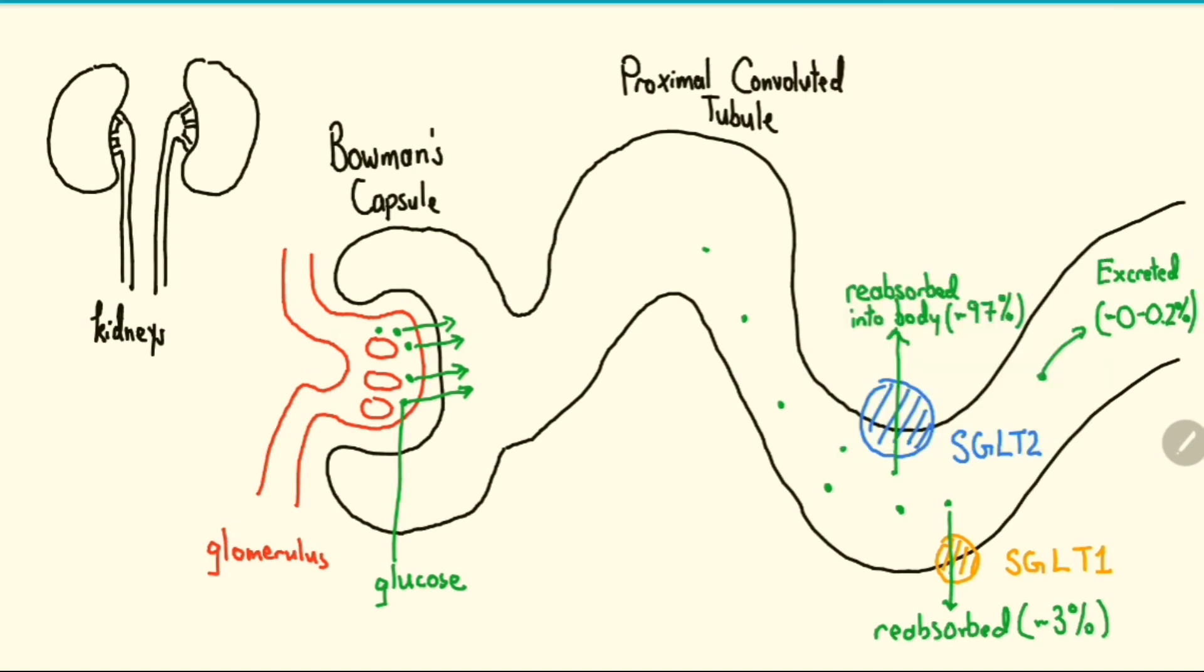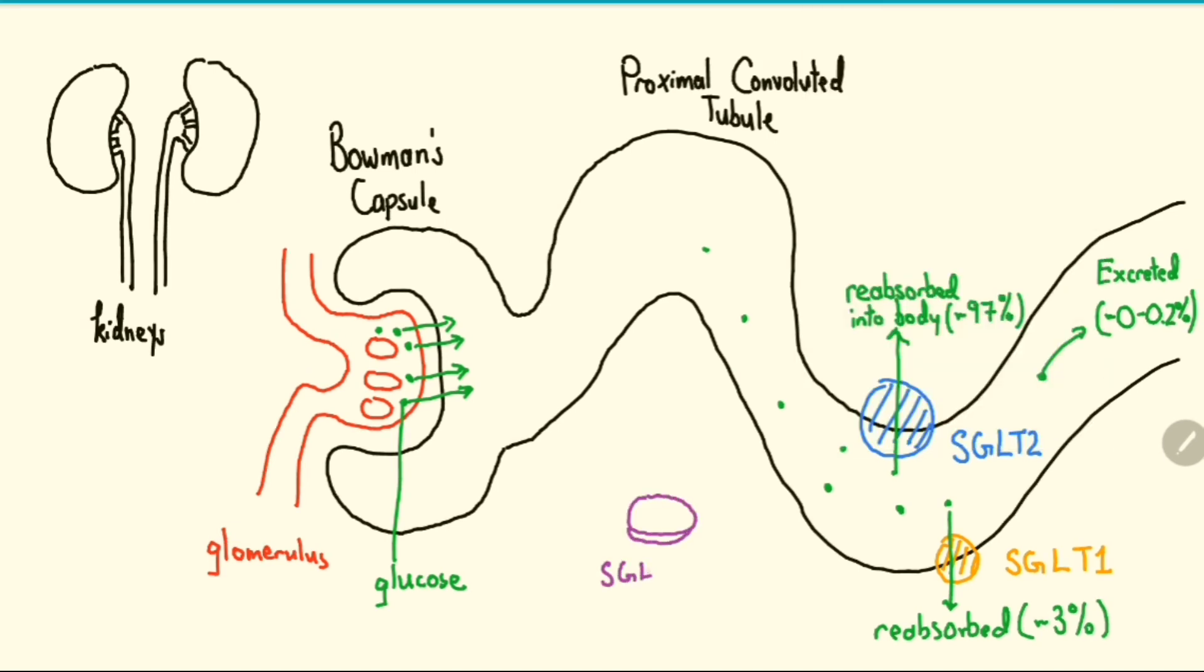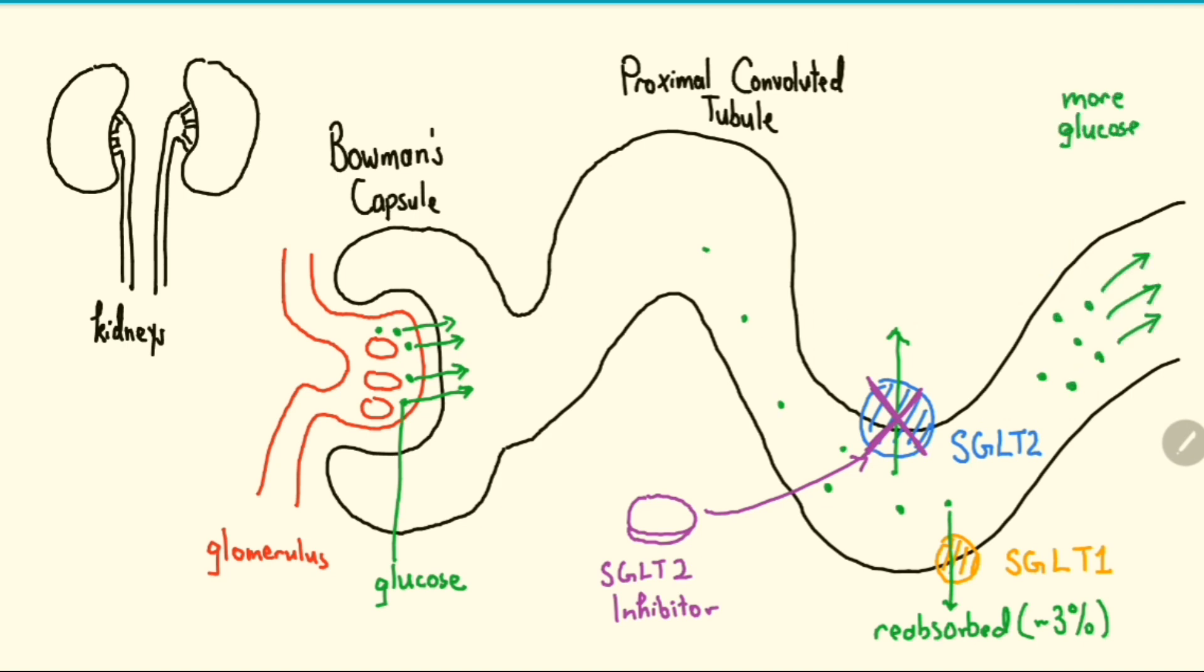As the name suggests, SGLT2 inhibitors, such as empagliflozin, bind to SGLT2 and prevent the reabsorption of glucose back into the body. As a result, more glucose is excreted through the urine, and this results in a reduction in blood glucose.